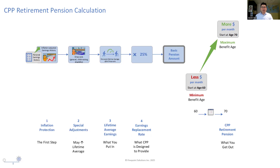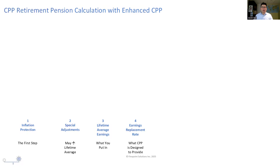Before we wrap up, I need to mention a new detail that is very important. Up to this point, I have only shown how the original CPP program works. Now with the enhanced CPP, there are two new parts: the first additional CPP, or CPP1, and the second additional CPP, or CPP2. Calculating the enhanced CPP follows the same basic four steps but with a few small changes — the numbers change and do different things, but the general idea is the same.